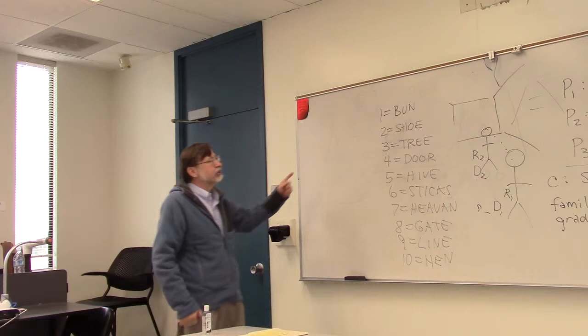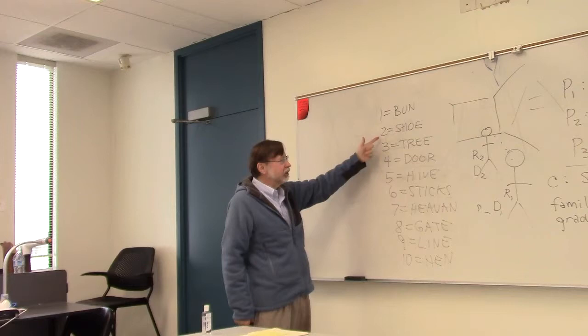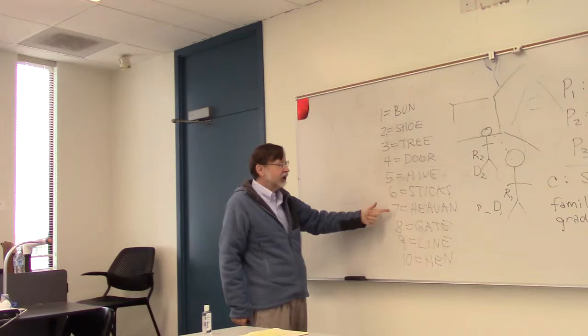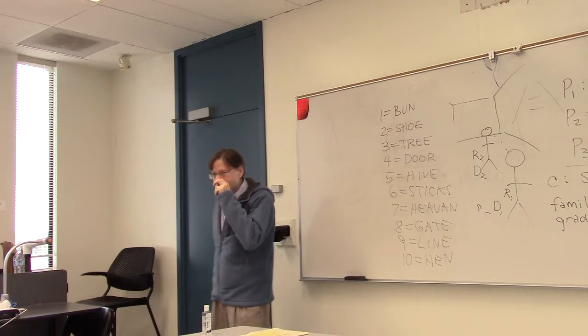We're going to first learn this extra thing — the peg word system. One is a bun, two is a shoe, three is a tree, four is a door, five is a hive, six is sticks, seven is heaven, eight is a gate, nine is a line, and ten is a hen.